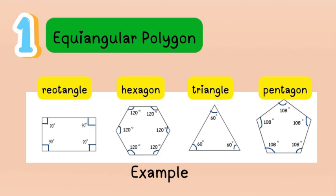For a triangle, the total interior angles are 180 degrees, so divided by three vertices, each angle is 60 degrees. For a hexagon, you can use the formula (n − 2) × 180°, where n is the number of sides. With n = 6: (6 − 2) × 180° = 720 degrees total interior angle.